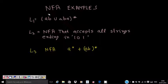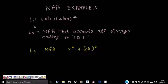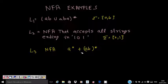In this lecture we are going to learn a few more examples of NFA. The first language accepts (AB ∪ ABA)*. The next NFA accepts all strings that end in 101, where Sigma is {0, 1}. The last one is A* + AB* where Sigma is {a, b}. These are the three languages we will cover.